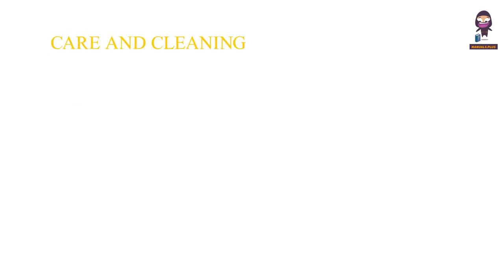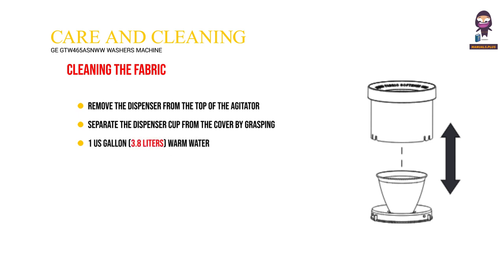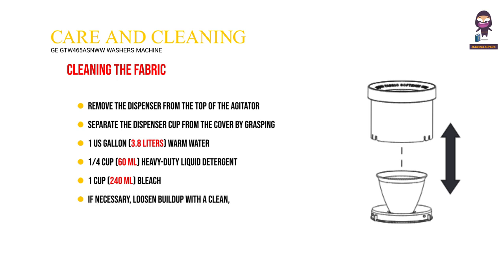Care and Cleaning — Cleaning the fabric softener dispenser: Remove the dispenser from the top of the agitator. Separate the dispenser cup from the cover by grasping the top and pushing down on the inside of the cup with your fingers. Soak in a solution of 1 US gallon (3.8 liters) warm water, 1 quarter cup (60 milliliters) heavy duty liquid detergent, and 1 cup (240 milliliters) bleach. If necessary, loosen buildup with a clean soft cloth after soaking. Rinse and reassemble the dispenser. Place the dispenser back on the agitator.